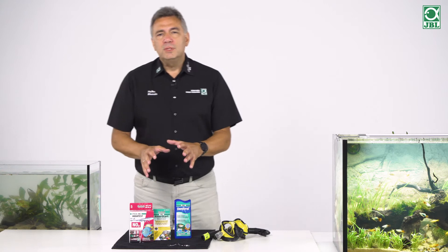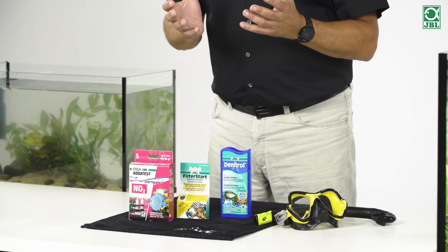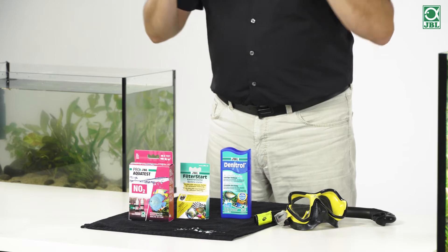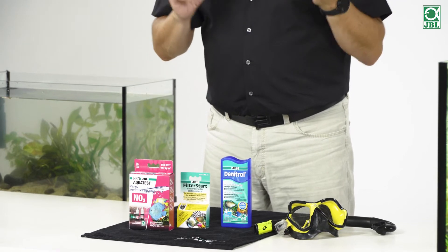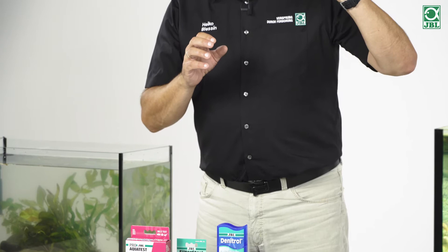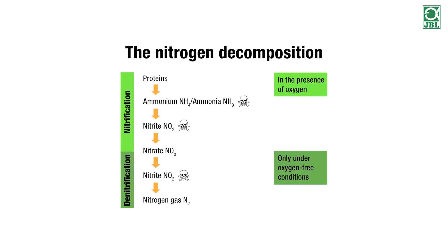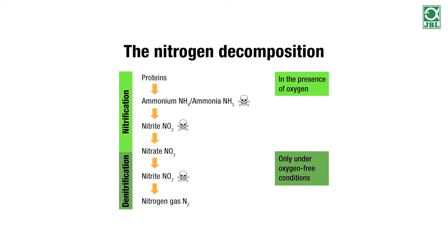Here the issue is the nitrogen cycle. We all learned about it in school, and it was explained vaguely and sometimes not very cleverly. We have a protein — for example, a dead fish. Because of the protein there is also a very strong smell when it denaturizes and rots. The protein turns into ammonium or ammonia, NH4 or NH3.